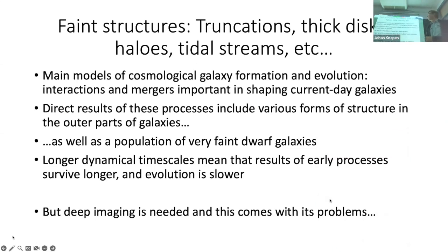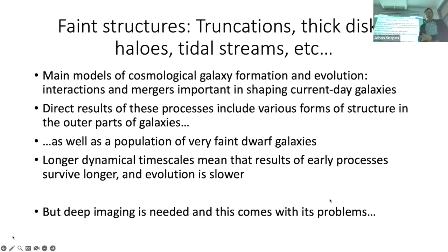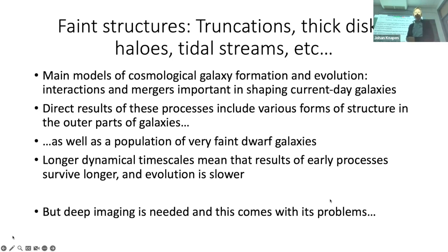One of the aspects of galaxy structure is faint structures, which includes truncations — the ends of the disk of galaxies — thick disks, halos around galaxies, tidal streams that may be results of past interactions, and many others. The main models of cosmological galaxy formation say that interactions and mergers are important in shaping current-day galaxies. We can find them through faint features. Longer dynamical timescales on the outskirts of galaxies mean that the results of these early processes survive longer there, making them good tracers of earlier evolution. But deep imaging of galaxies is needed, and this comes with a number of problems.